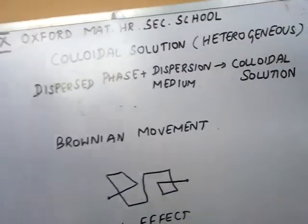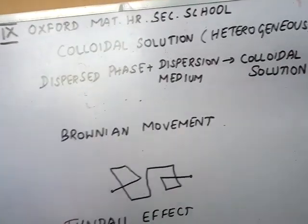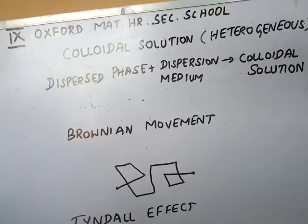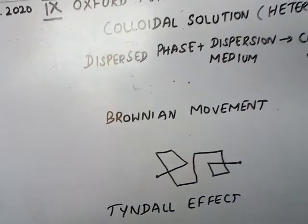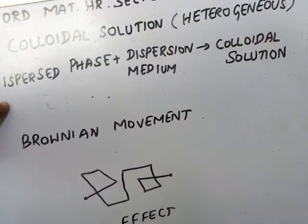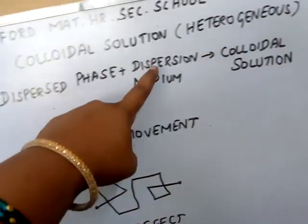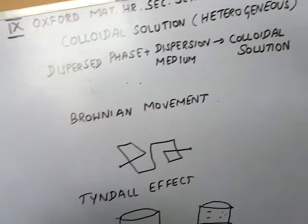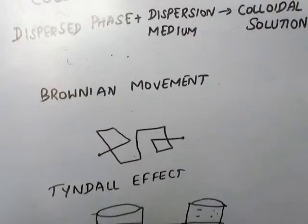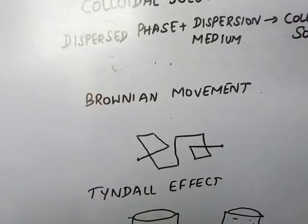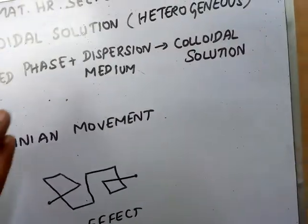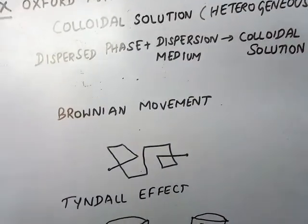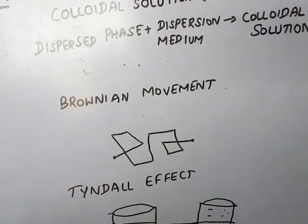Suppose when you are going, somebody is pushing you. Will you go in the perfect manner? Automatically, what you will do? You will go in a random manner. Likewise, due to unbalanced bombardment of dispersed phase, that is colloidal particles, by the molecules of dispersion medium, water, so only this random motion takes place. Unbalanced bombardment of colloidal particles by the molecules of dispersion medium is called as Brownian movement. Is it clear students now?